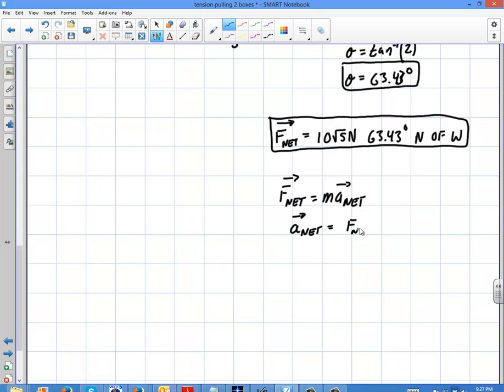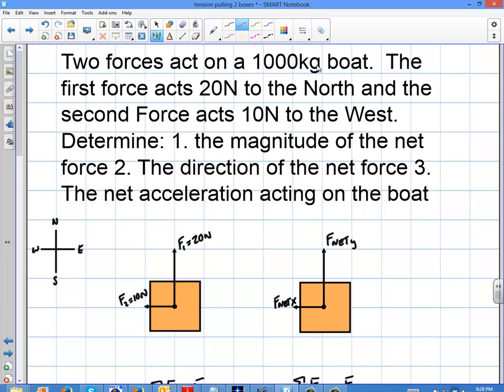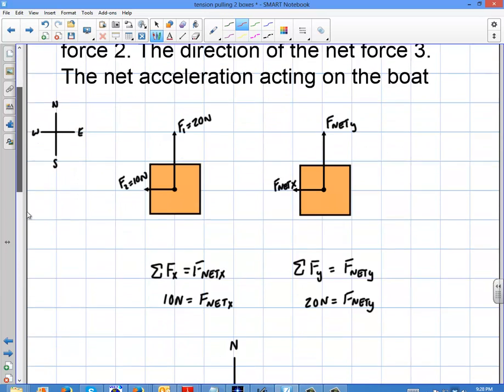So it's going to be the force net over the mass. So the magnitude of this is just going to be 10 root 5, which is the net force, divided by the mass. So if you go up here and you recall, our mass is 1,000 kilograms in this example. That's my boat.